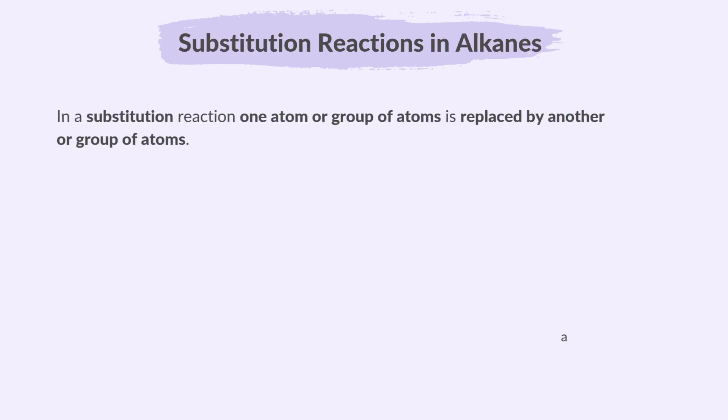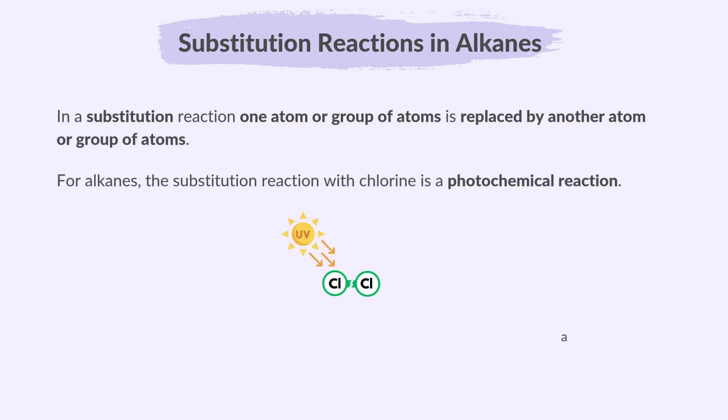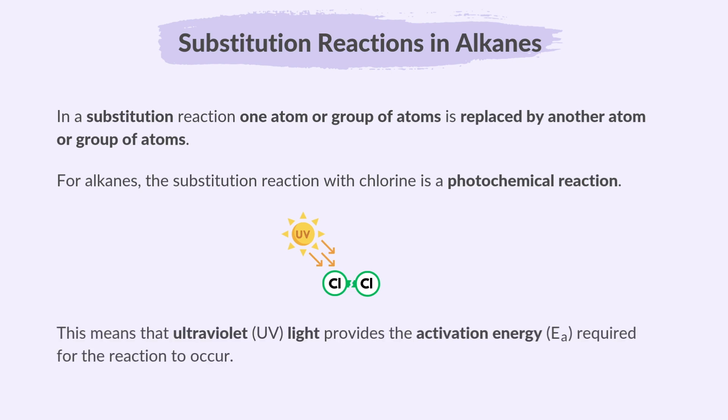In a substitution reaction, one atom or group of atoms is replaced by another atom or group of atoms. For alkanes, the substitution reaction with chlorine is a photochemical reaction. This means that ultraviolet or UV light provides the activation energy required for the reaction to occur.